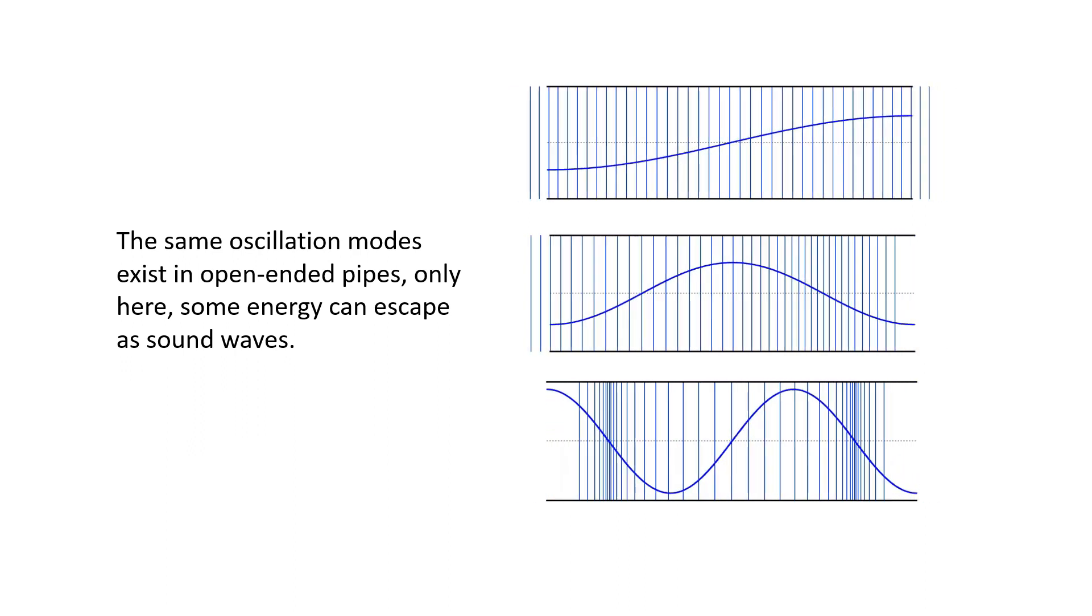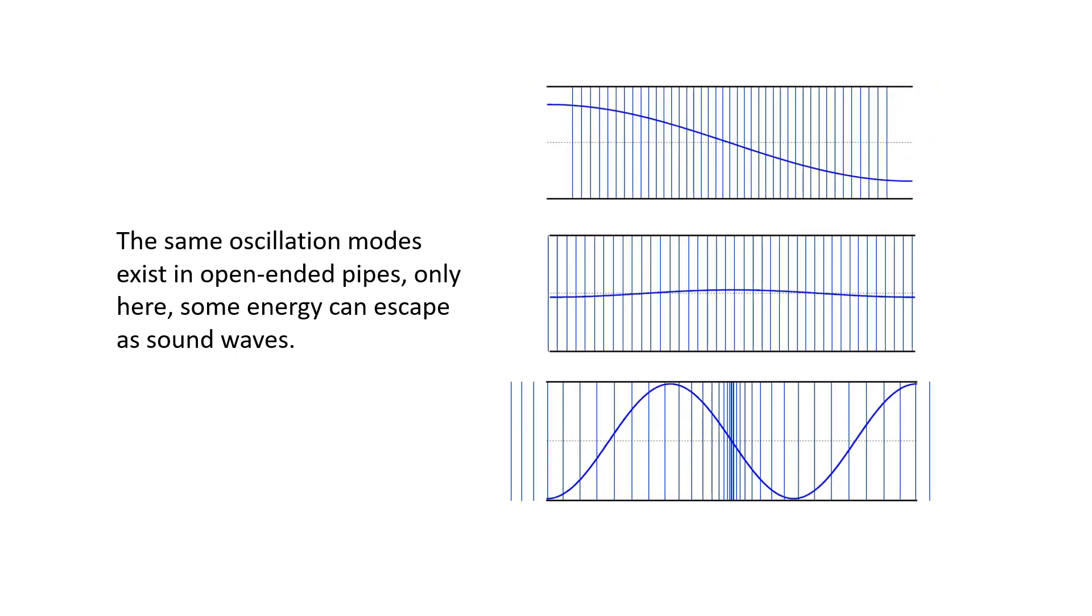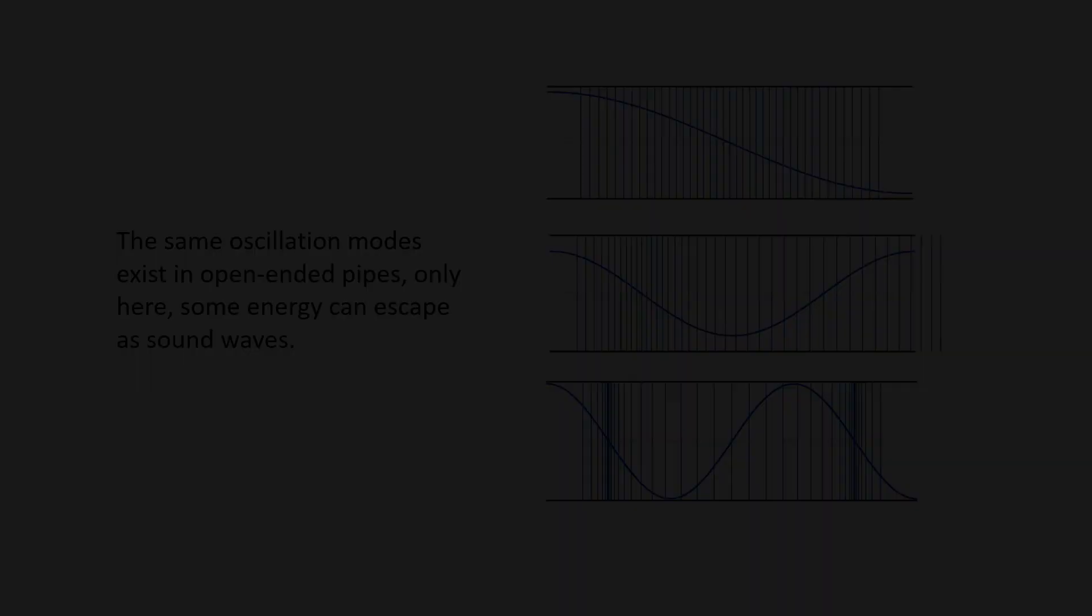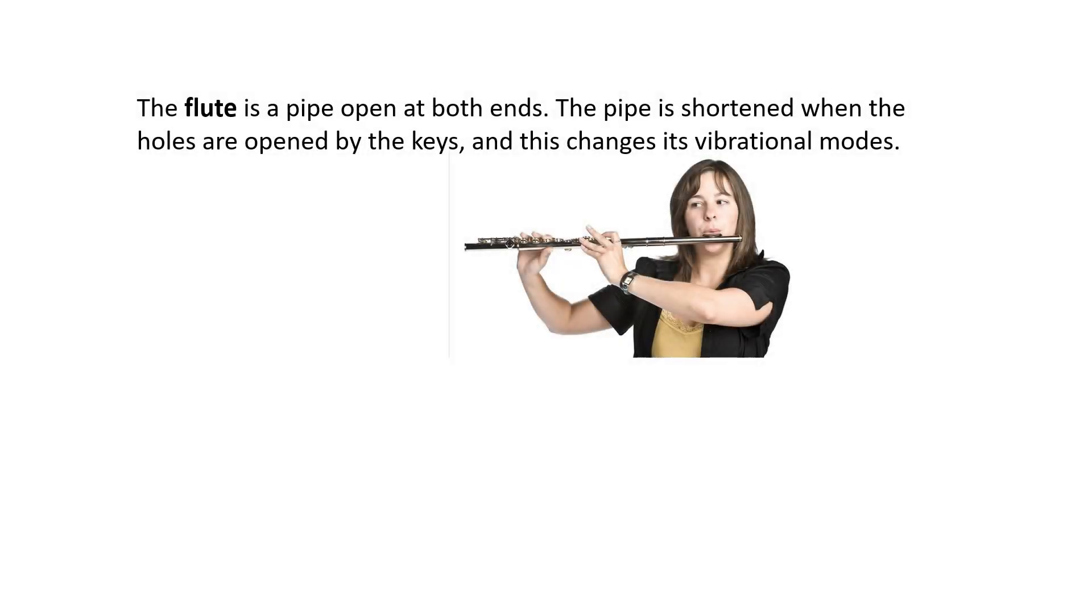Only here, some energy can escape as sound waves. The flute is a pipe open at both ends. The pipe is shortened when the holes are opened by the keys, and this changes the vibrational modes.